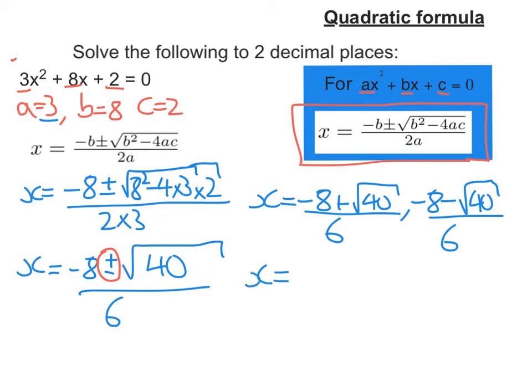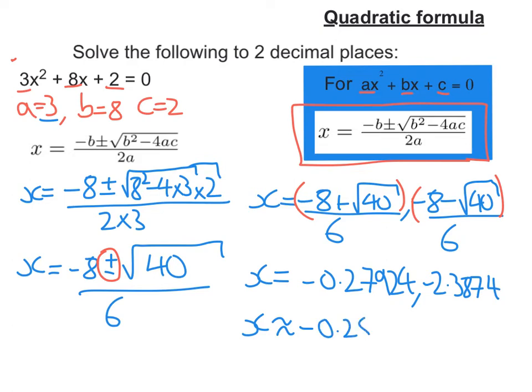Now, put those into my calculator, remembering either to use your fraction button or to put brackets around the top line. And if I do that, you're going to get minus 0.27924 for the first one, and the second one is negative 2.3874. And if I want that to two decimal places, as the question is asked, I'm going to get negative 0.28 and negative 2.39.